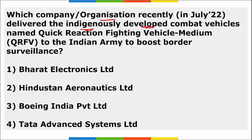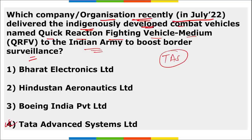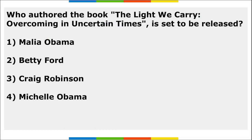Next: which company recently delivered the indigenously developed combat vehicle named Quick Reaction Fighting Vehicle Medium to the Indian Army to boost border surveillance? Tata Advanced Systems Limited (TASL) delivered these vehicles. TASL became India's first private sector company to produce and deliver wheeled armor combat-ready vehicles for the Indian armed forces. Correct option is option fourth.